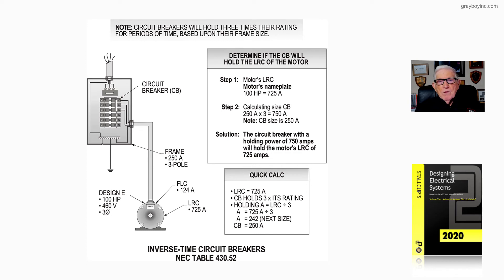If you didn't want to round it up, you could just start at 725, divide it by three, you come up with 242, round it up to 250, and that's going to allow your motor to start and run.